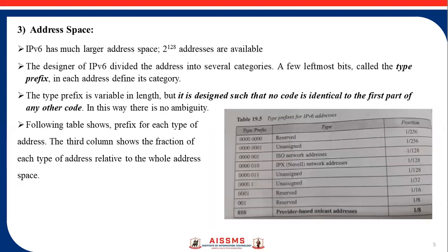Next is address space. IPv6 has a much larger address space — 2 raised to the power of 128 addresses are available. The designers of IPv6 divided this address space into several categories. A few leftmost bits, called the type prefix, in each address define its category. The type prefix is variable in length but is designed such that no code is identical to the first part of any other code, so there is no ambiguity.